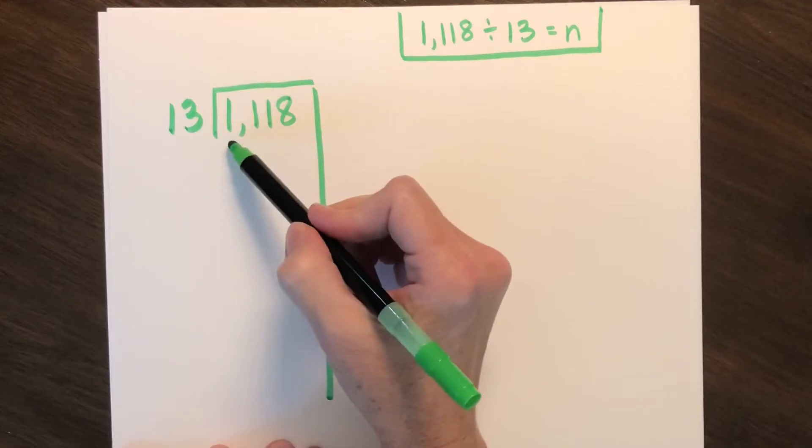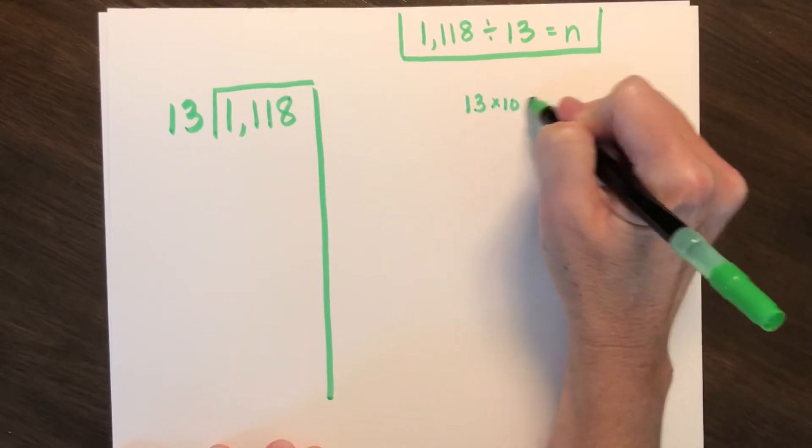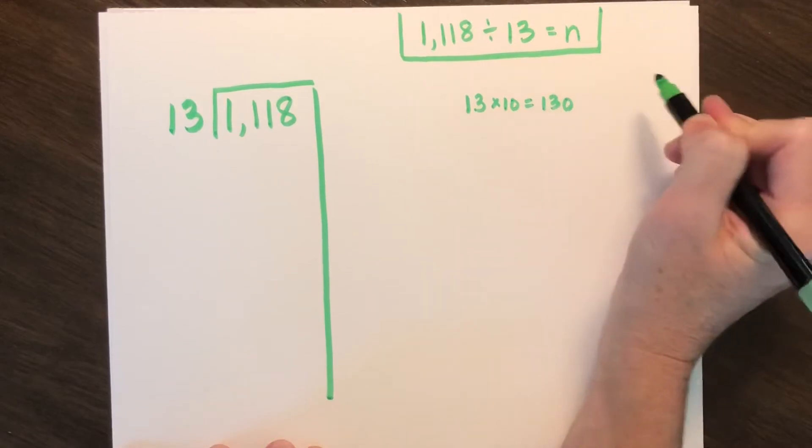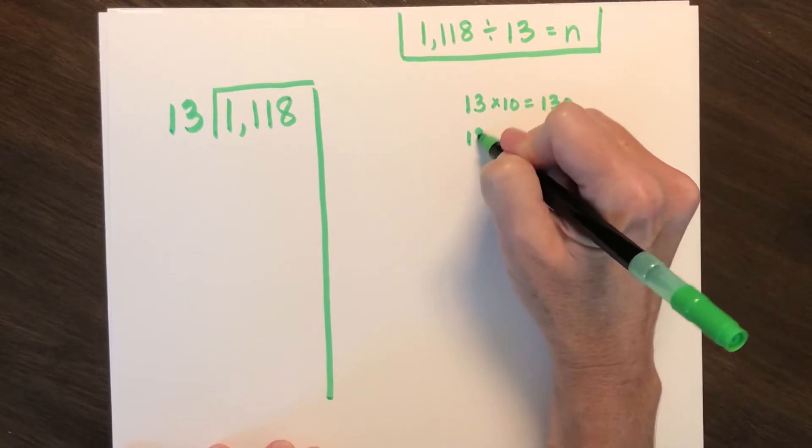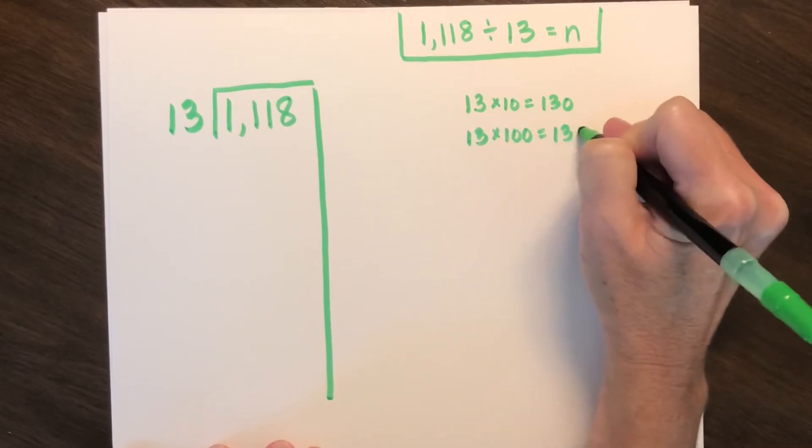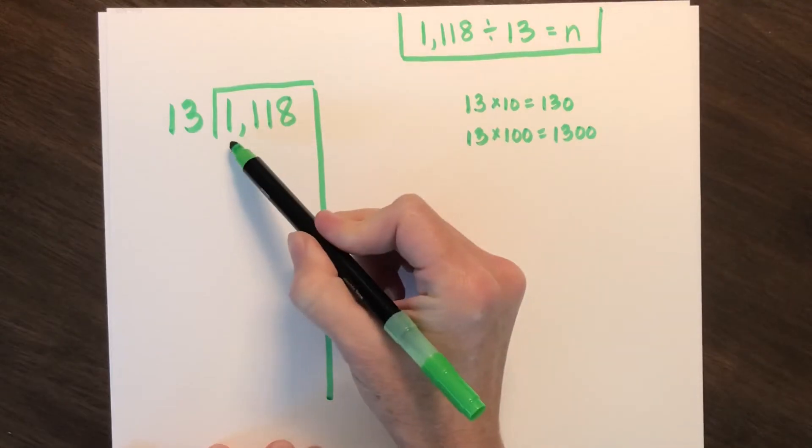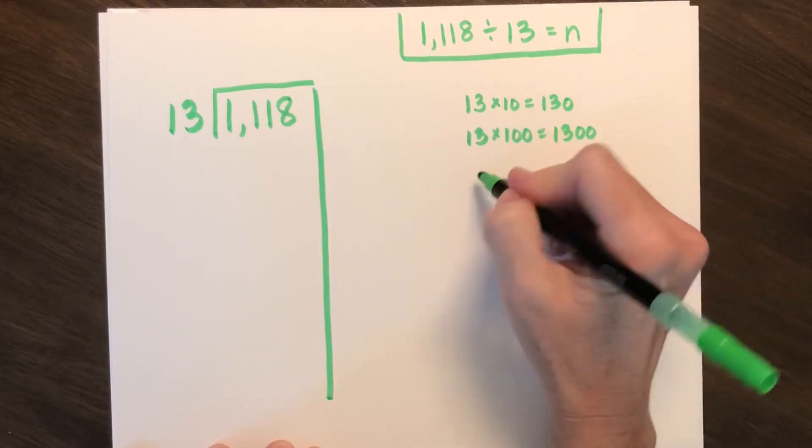I can see it's in the thousands. I can go ahead and think 13 times 10 is 130. I can do that, but that's pretty low. Let's see if I do 13 times 100 is 1,300, which is too high.